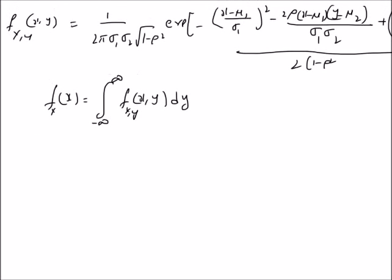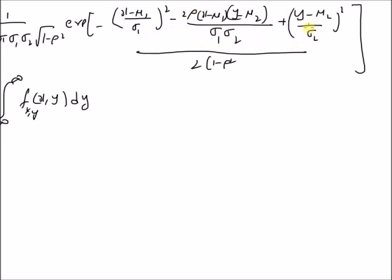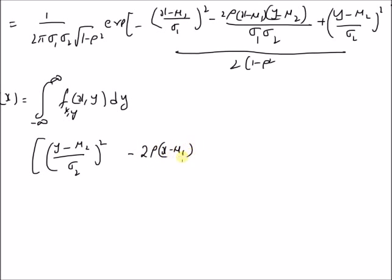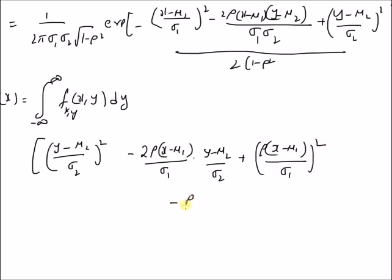In order to accomplish this task, we use the technique known as completing the square. We can clearly see that here we have a term a² and 2ab, and we want to add and subtract the term b² to complete the square. The exponent for the joint PDF can be rewritten as follows: (y−μ₂)/σ₂)² is the a² term, and −2ρ·(x−μ₁)/σ₁·(y−μ₂)/σ₂ is the 2ab term. Now we add the b² term, that is [ρ·(x−μ₁)/σ₁]².